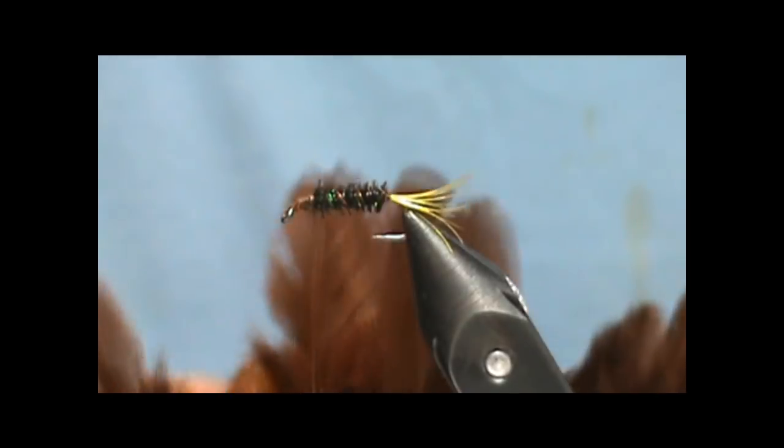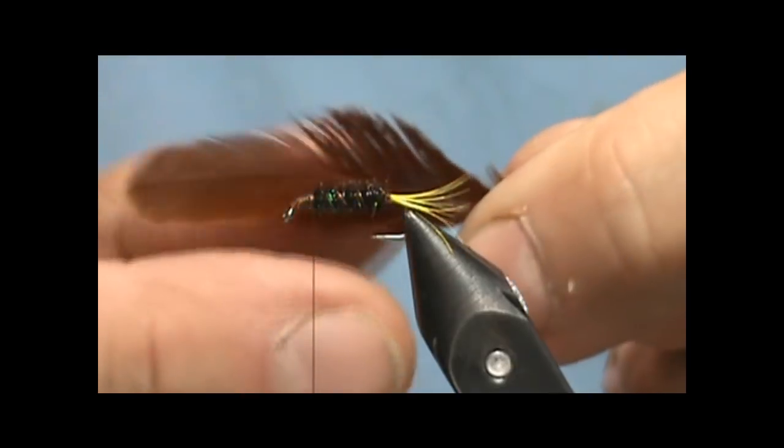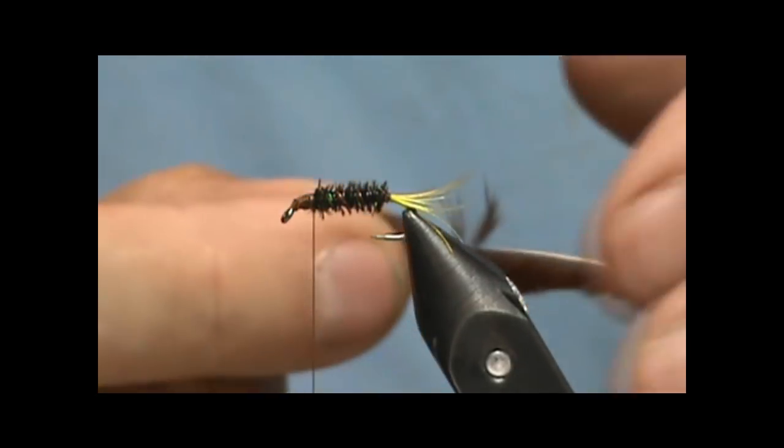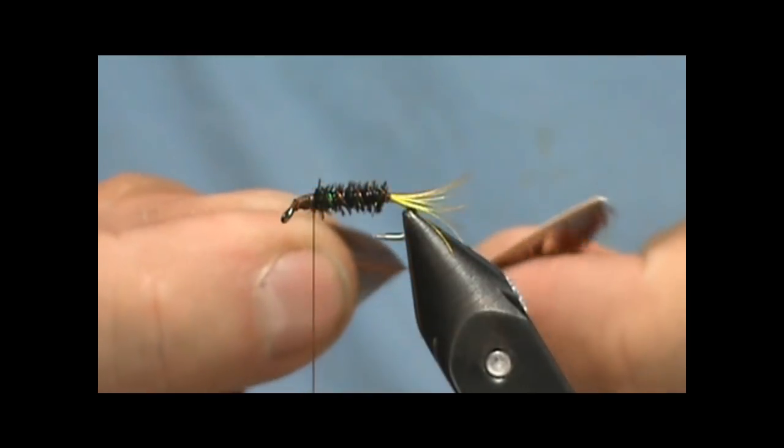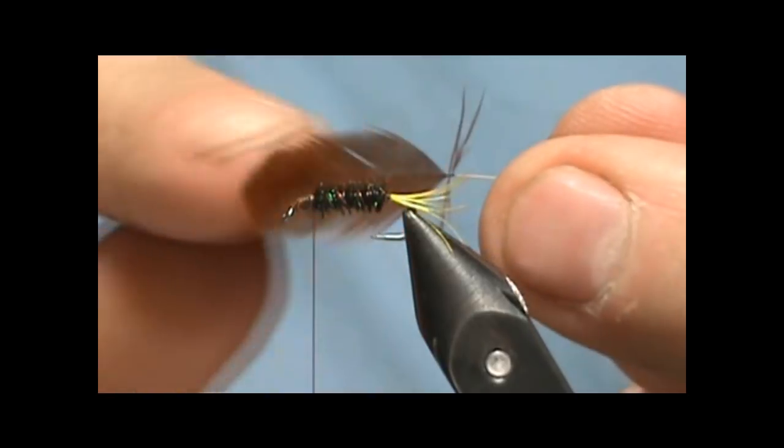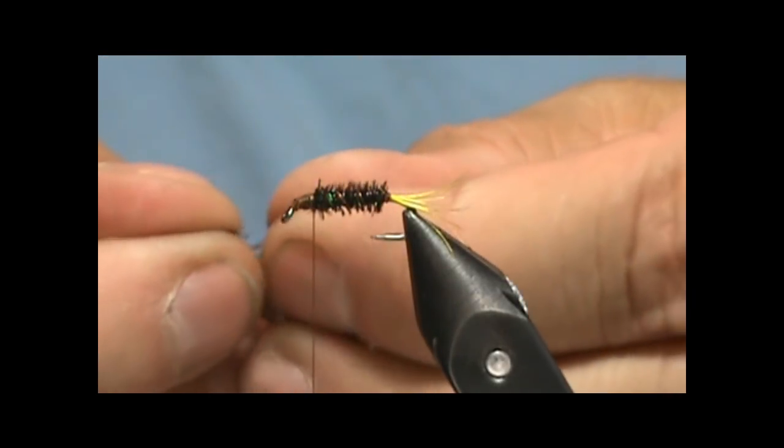Now for our hackle I'm going to take a brown hen hackle. We're going to take a single hen hackle. I'm going to pull all of the fluff from the bottom, and then I'm going to take the hackle from the top of the feather.